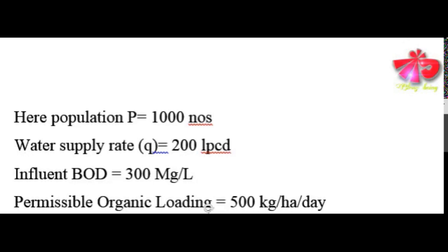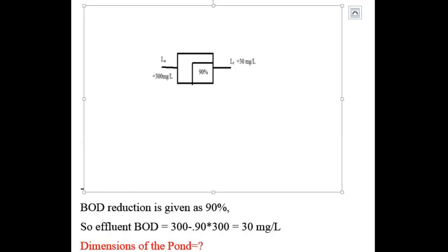From the question: population P = 1000 people, water supply rate = 200 LPCD, influent BOD at the inlet = 300 mg per liter, and permissible organic loading = 500 kg per hectare per day. This 500 kg per hectare per day is the maximum permissible organic loading that the oxidation pond can have — we are not allowed to exceed this value.